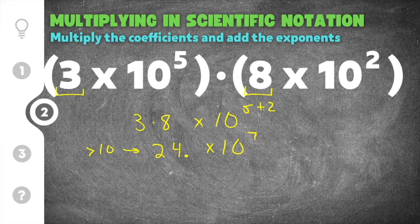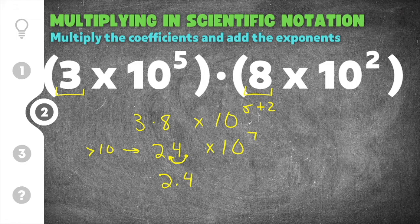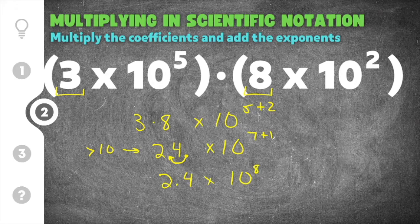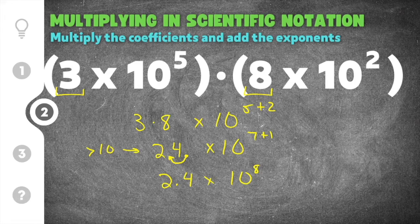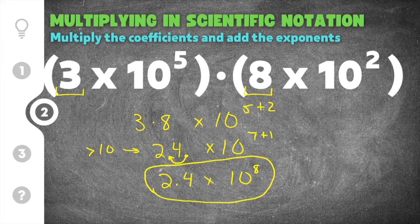We move the decimal one place to the left to make it 2.4. Because the decimal moves left one time, we add 1 to the exponent to compensate, changing it to 10 to the 8th power. The power of 10 moves the decimal based on the exponent, so moving it once means adding 1. Now our coefficient 2.4 is between 1 and 10, so the solution is 2.4 times 10 to the 8th power.